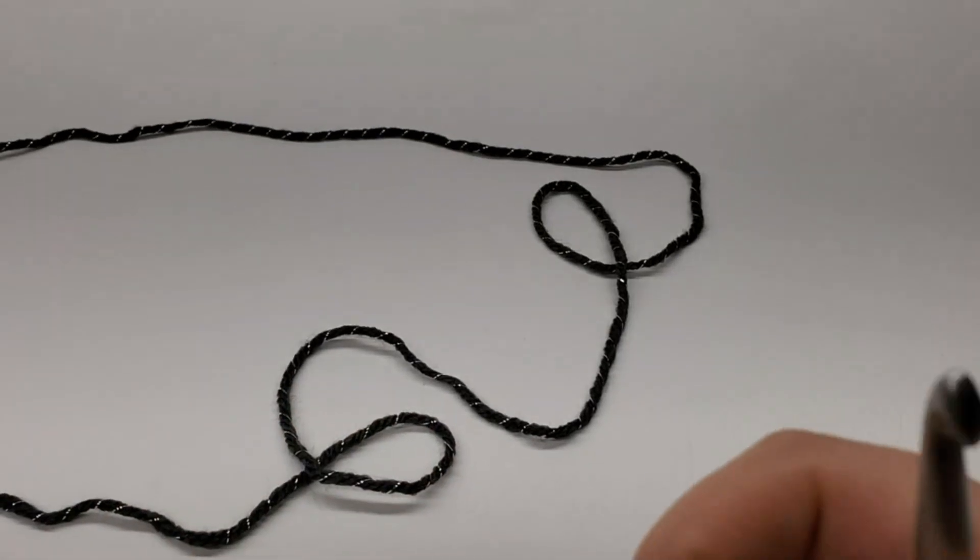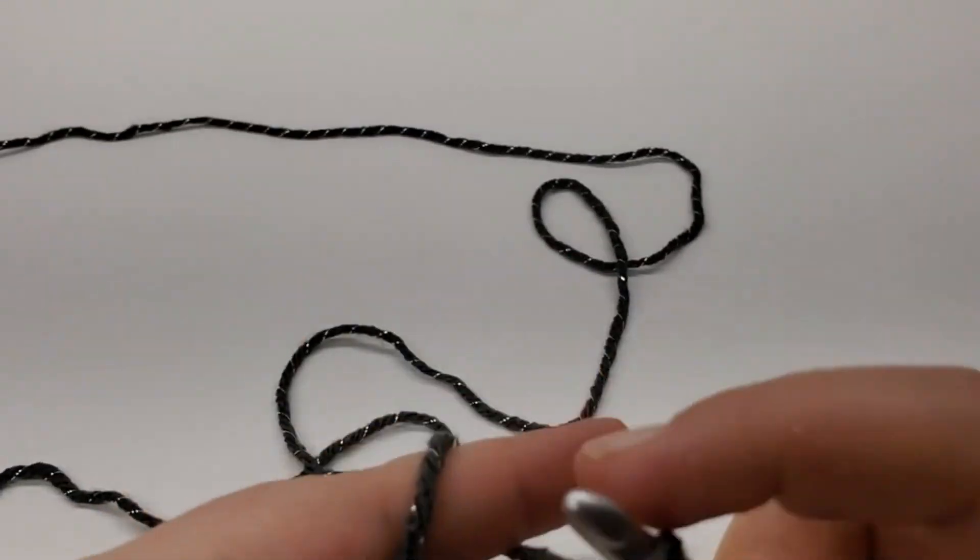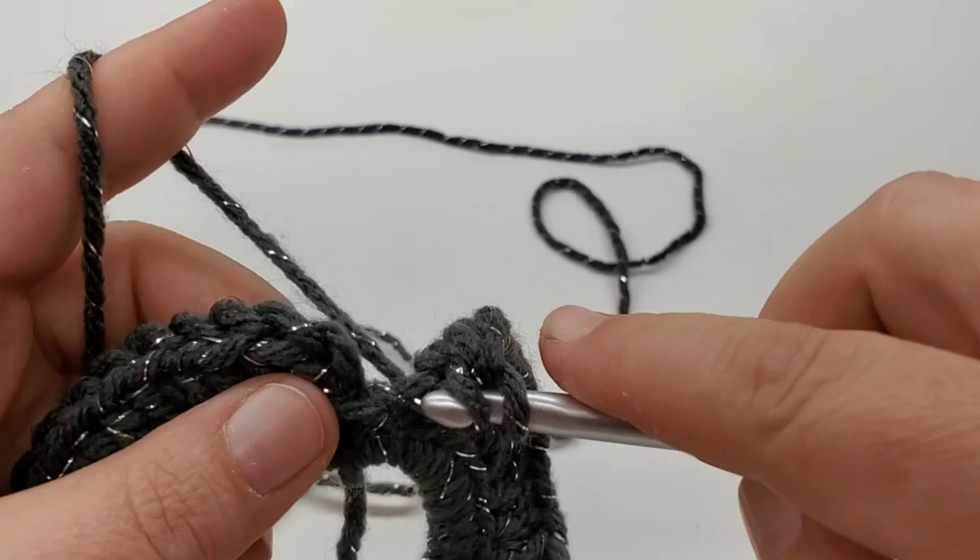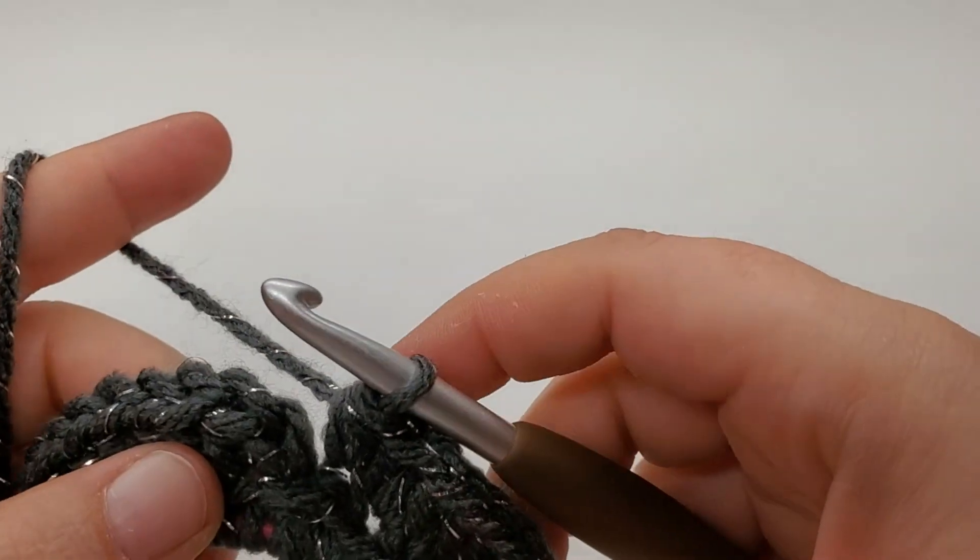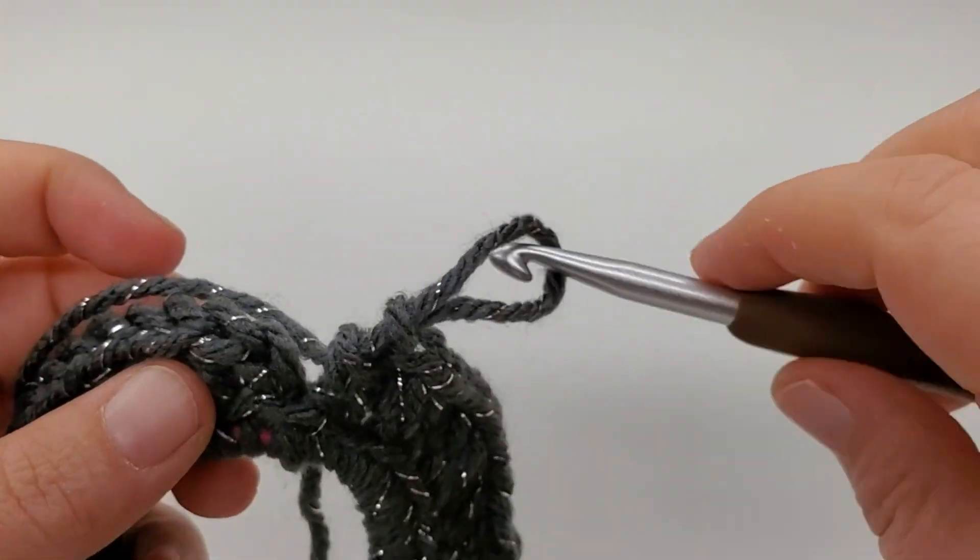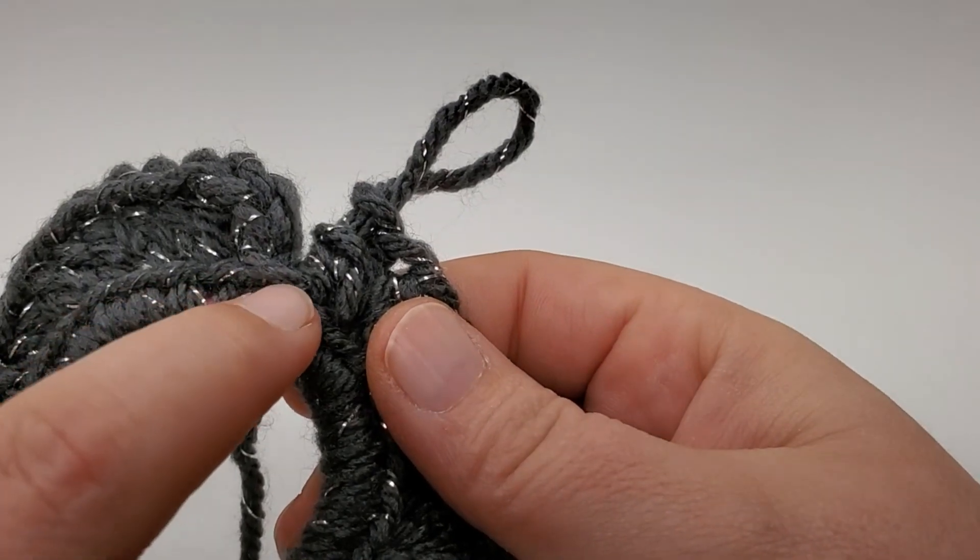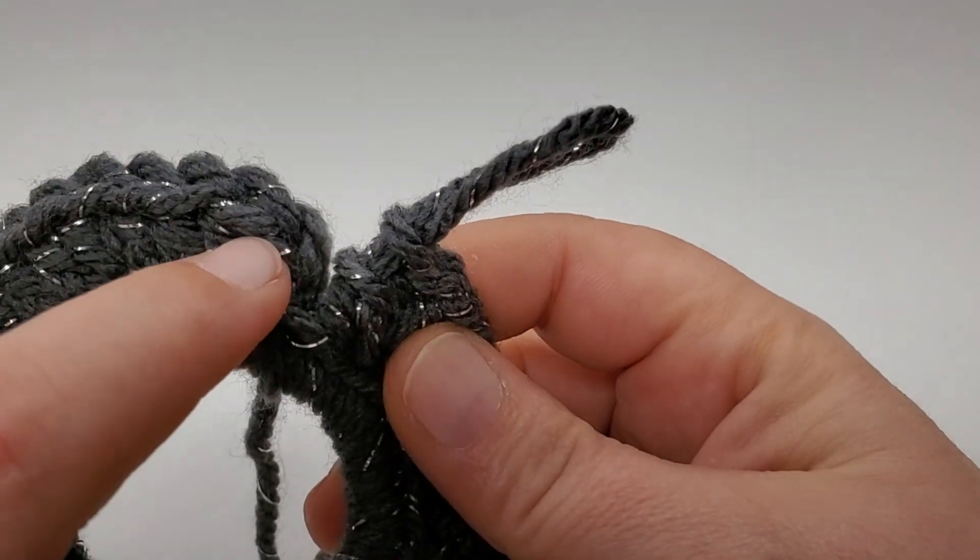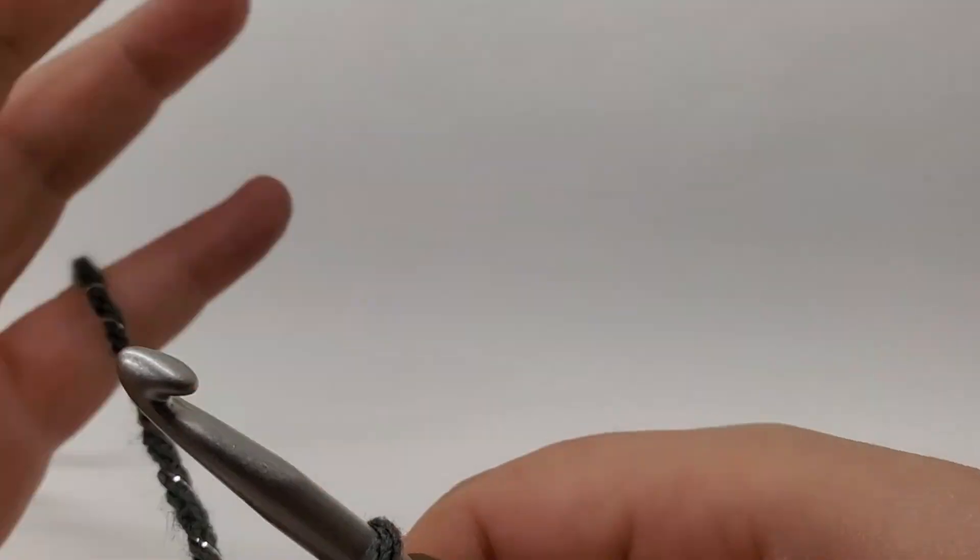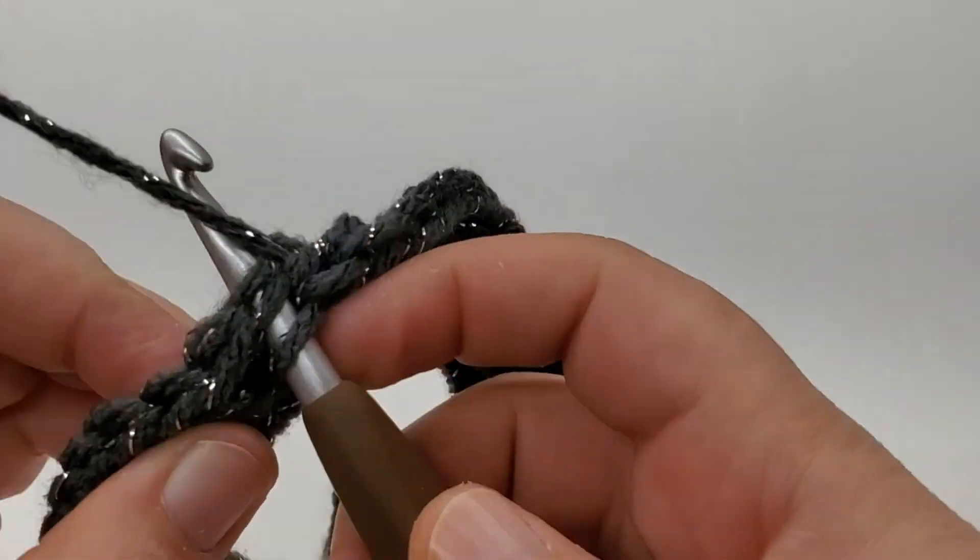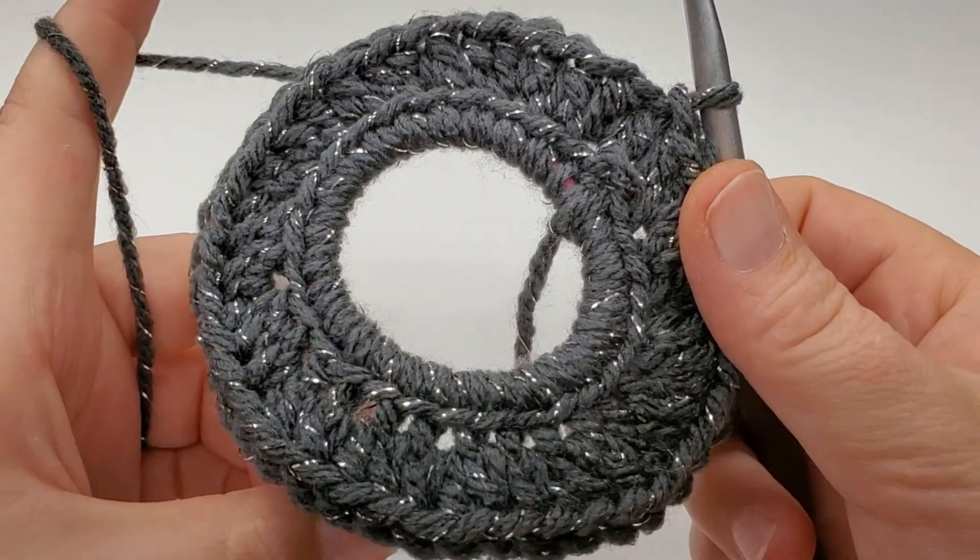I made it back around. And your last stitch should be a one back loop, half double in it. There's my last one. So we're going to slip stitch to our first. So if you see, here's the slip stitch, the chain one, and our first back loop half double. So we're going to slip stitch into that. And you should have 42 all the way around.